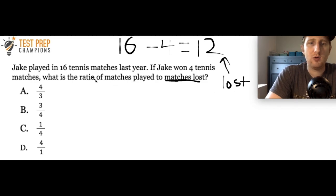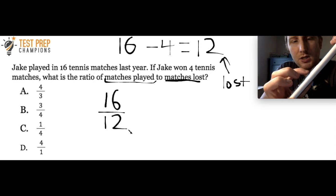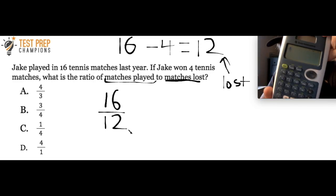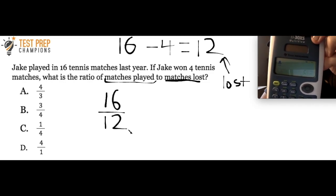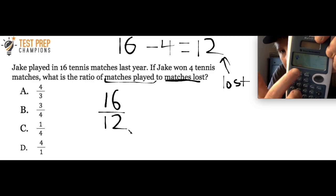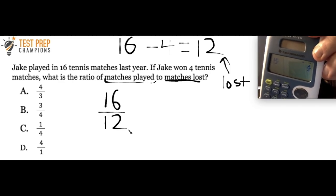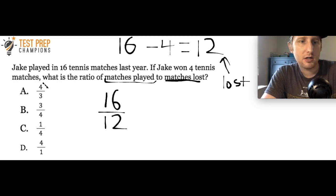Now the ratio of matches played to matches lost is straightforward. Matches played comes first, so 16 goes on top; matches lost is 12 and goes on the bottom. Using the calculator's n over d button, press 16, arrow down, press 12, then press equals — it gives 4 over 3. Answer A is correct.